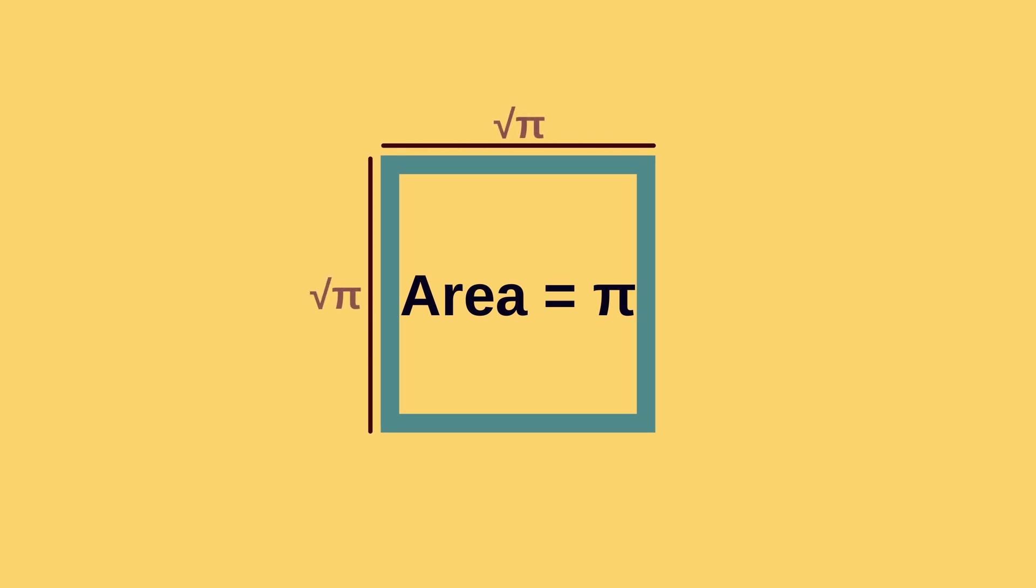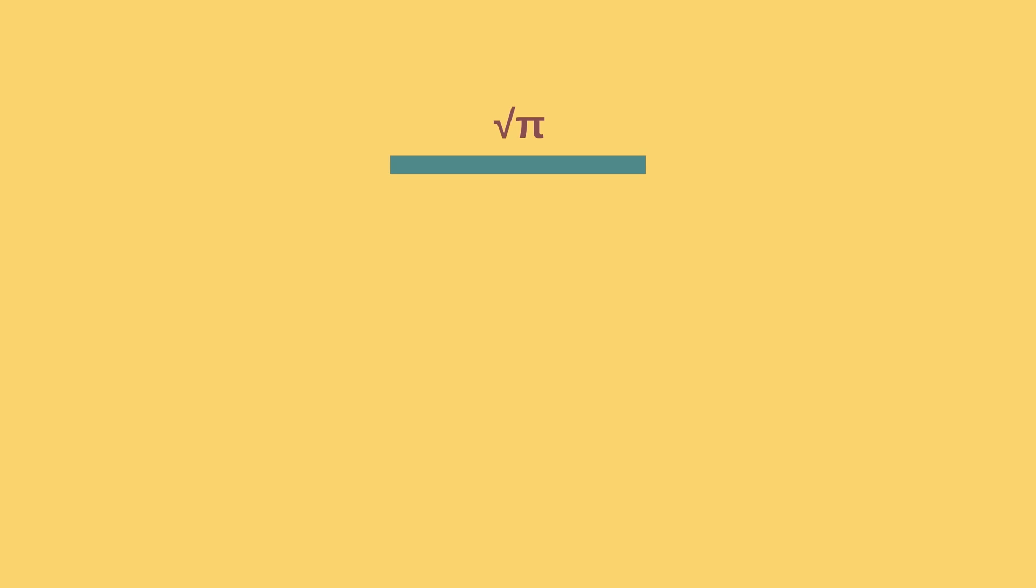So the problem of squaring a circle now breaks down to making a line of length √π. Now this is where the trouble begins.